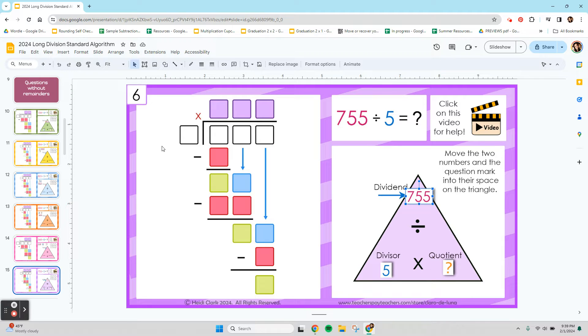So our steps are divide, multiply, subtract, bring down. First, let's put in our dividend, and to use these text boxes, all you have to do is click and type. 755. And if you're on an iPad, you would double tap, and then you would type your number.